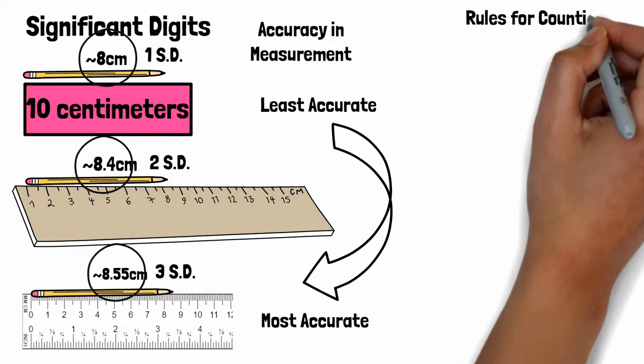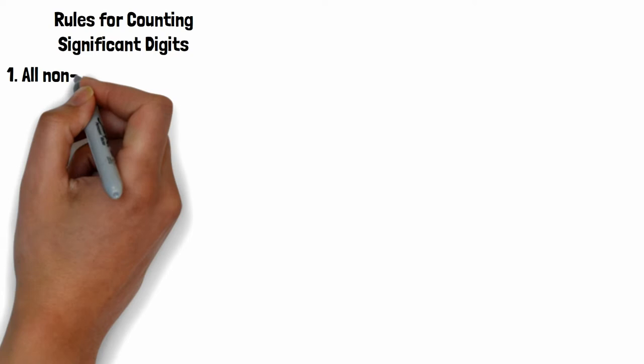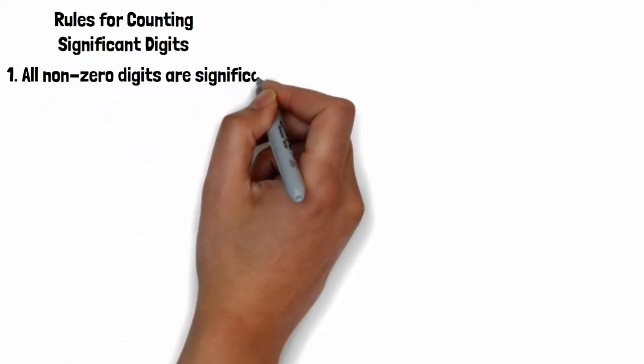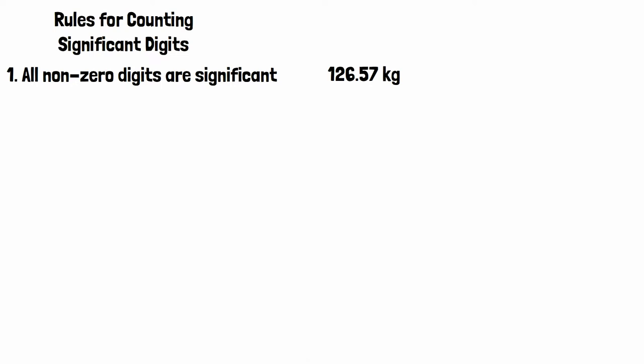Let's go over the rules for counting significant digits. The first says that all nonzero digits are significant. This number for example has five significant digits.